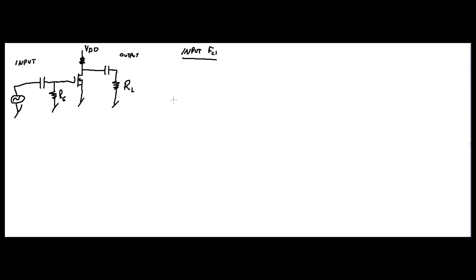If we redraw this, we're basically going to have an input signal coming in, going through a capacitor, then you have a resistor directly to ground, and then coming right in to your transistor gate — I'll call that Rn gate.